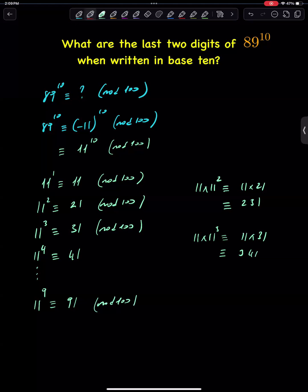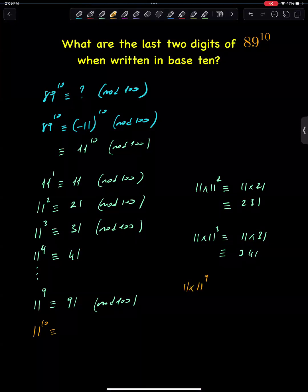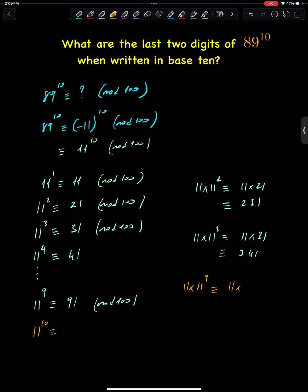And lastly, we have 11 to the power of 10, which is congruent to 11 times 11 to the power of 9, which is congruent to 11 times 91, which is 1,001, which is congruent to 1. The last two digits of 89 to the power of 10 is 01.